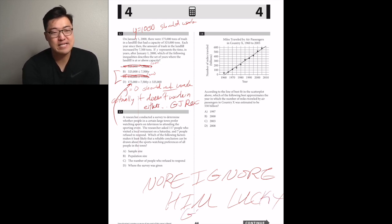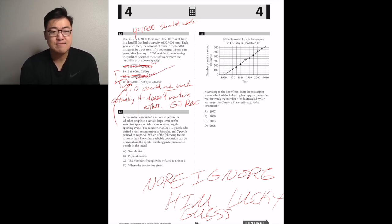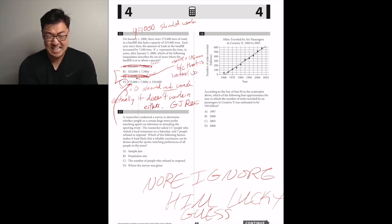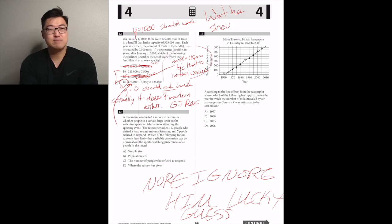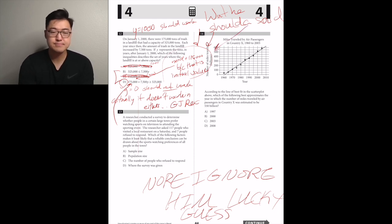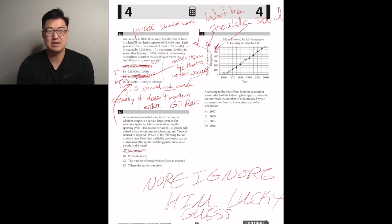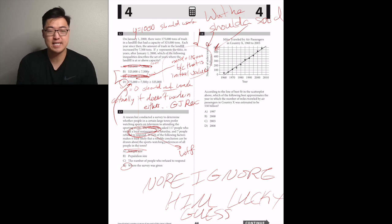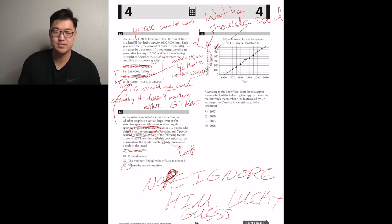A researcher surveyed 117 people who visited a local restaurant on a Saturday to determine sports-watching preferences — seven people refused to respond. Which factor makes it least likely that a reliable conclusion can be drawn? In survey questions, random sampling is key for good data. The fact that all these people are at a restaurant is the problem, so D. Sample size isn't the issue — it's bigger that the sample isn't randomly selected.